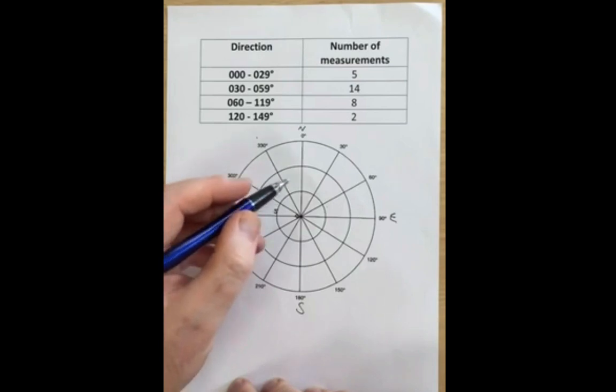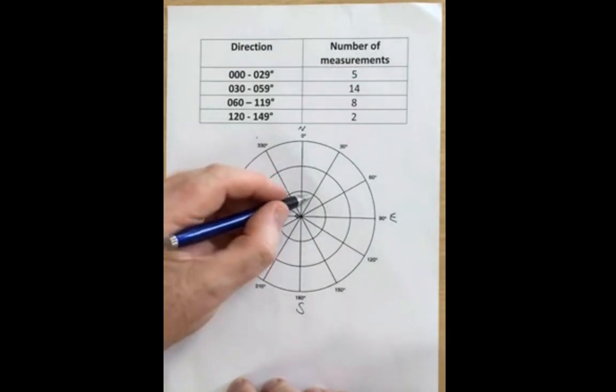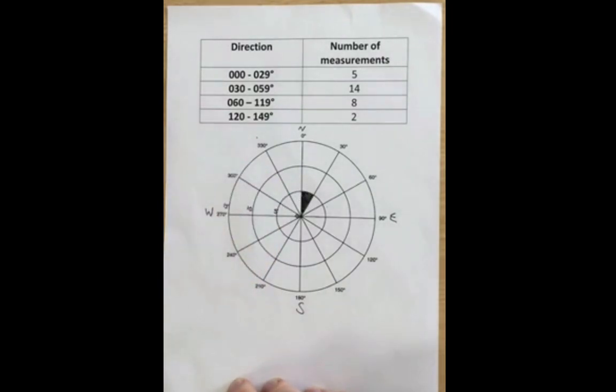On our scale, five is the first of these concentric circles. So what I can now do is shade in the slice of that circle or the wedge there, going out to five measurements.